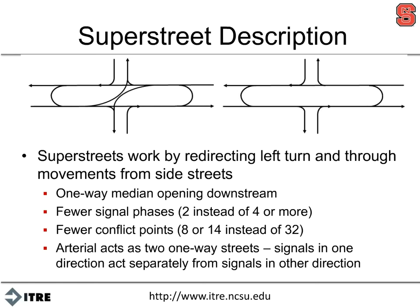The idea here is to reduce the number of signal phases. By reducing the number of signal phases, I can put that green time to the through movements on the arterial, which obviously is a good thing. We get a lot of throughput, we increase the life of the arterial without having to put an interchange in. There are also additional benefits of the super street that are very unique compared to others.